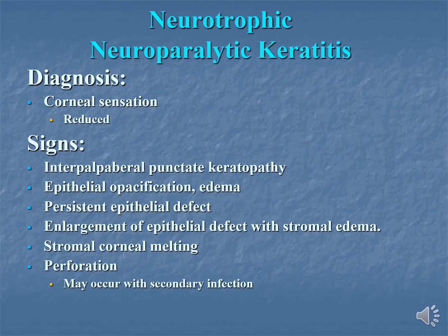To diagnose the case, we test corneal sensation — it is reduced. As far as clinical presentation is concerned, initially interpalpebral punctate keratopathy appears, then epithelial opacification and edema, persistent epithelial defect, then enlargement of the epithelial defect with stromal edema and stromal corneal melting. If untreated, perforation may result due to secondary infections.